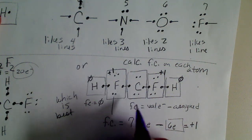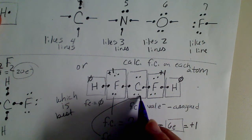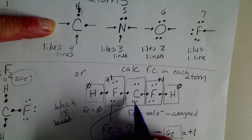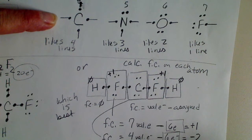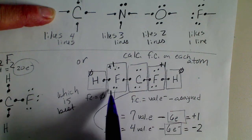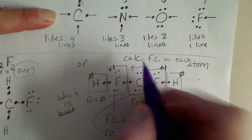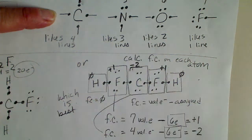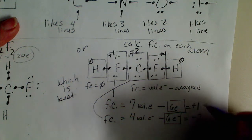Looking at the formal charge on carbon in this stringy structure: carbon has four valence electrons from the periodic table, minus six electrons assigned to it in this particular structure. That gives us a formal charge of minus two on the carbon. The formal charges need to add up to the overall charge on the molecule, which is zero, but having these non-zero charges means this structure is not ideal.